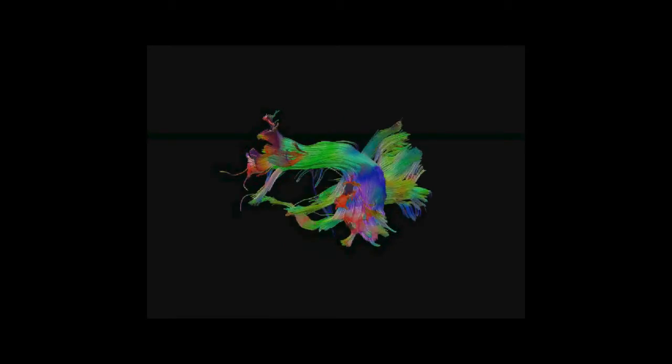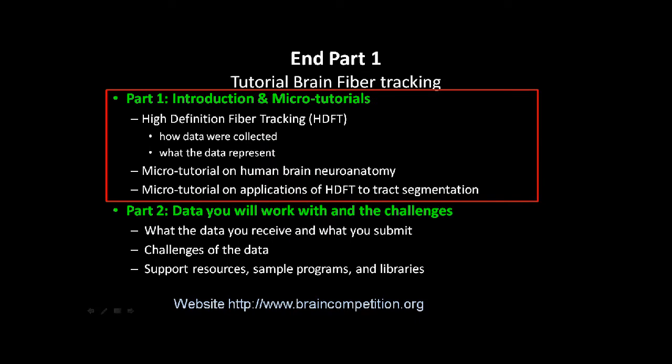This is the arcuate fasciculus growing. You can see the fibers expanding and the start points being generated as the fiber set expanded. Now we're shifting to a 3D rotation where you see the fibers poking through the cortical surface. This is an example of over-expansion of the fibers — as the seed growth goes over, you see other fiber tracks being brought into the mix. So this ends the first part of the tutorial. You can shift to part 2 if you'd like more information about the challenges of the data and the resources. Thank you.